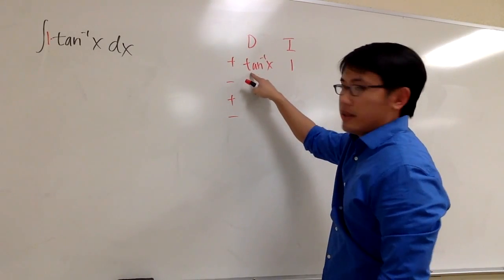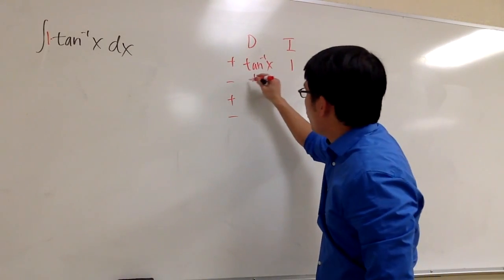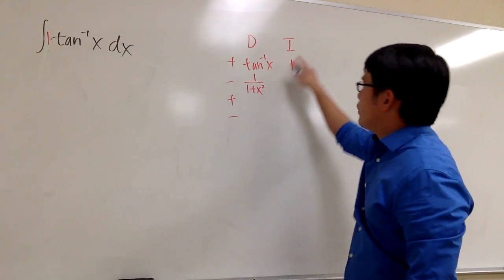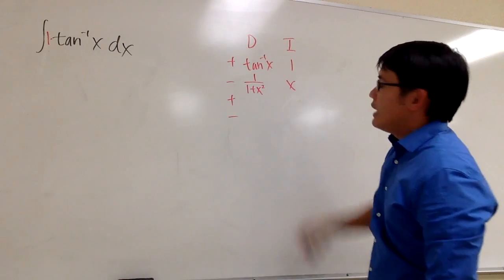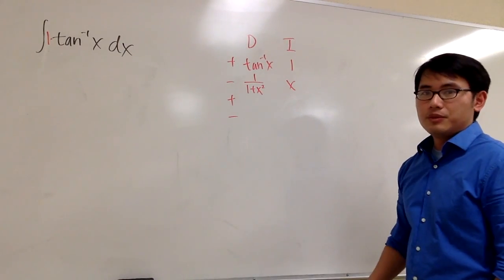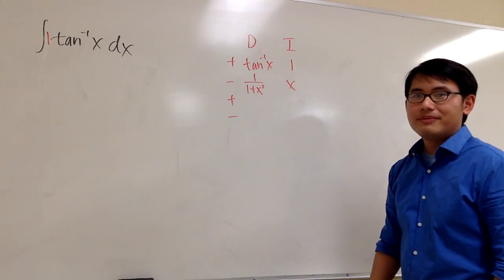Ok? So let's get to work. Taking the derivative of the inverse tangent x, we are going to get 1 over 1 plus x squared. And then when we integrate 1, in the x row, we get x. And let's take a look at this. Should we keep going or should we stop?